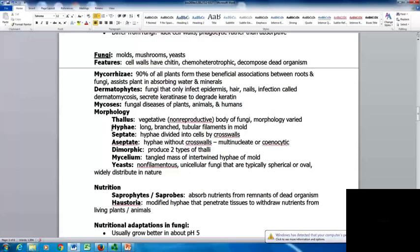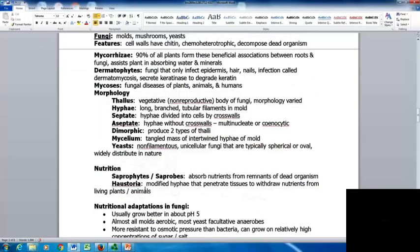Looking at morphology, the thallus is the vegetative or non-reproductive body of fungi. The hyphae are long branch tubular filaments seen in mold. Septate hyphae are divided into cells by cross walls. Aseptate are hyphae without cross walls, can be multinucleate or coenocytic. When an organism is dimorphic, it produces two types of thalli. Mycelium is a tangled mass of intertwined hyphae mold. Yeasts are non-filamentous unicellular fungi that are typically spherical, oval, and widely distributed in nature.